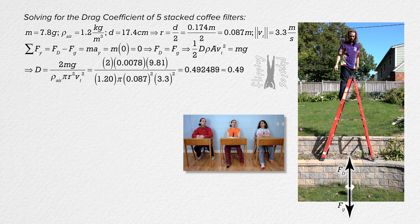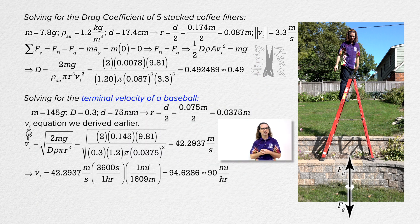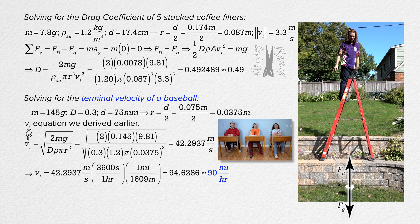Why did we use coffee filters instead of something more interesting, like a baseball? The terminal velocity of a baseball is roughly 90 miles per hour. A major league pitcher can throw a baseball faster than its terminal velocity. But why couldn't we just use a baseball instead of five coffee filters?